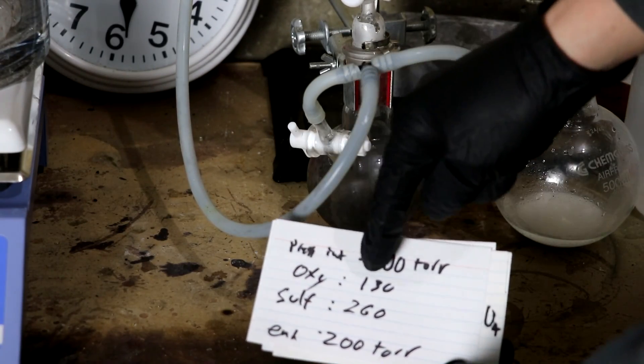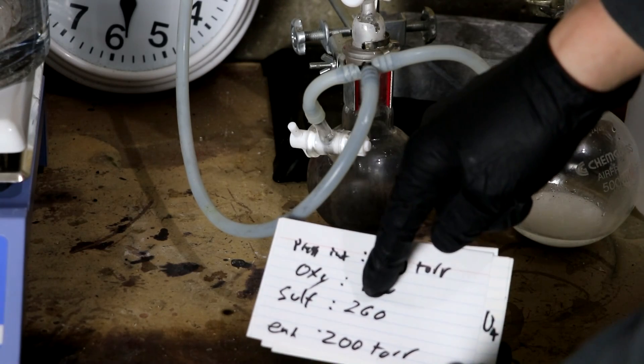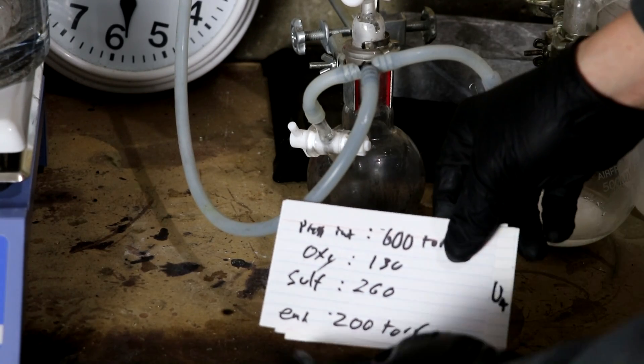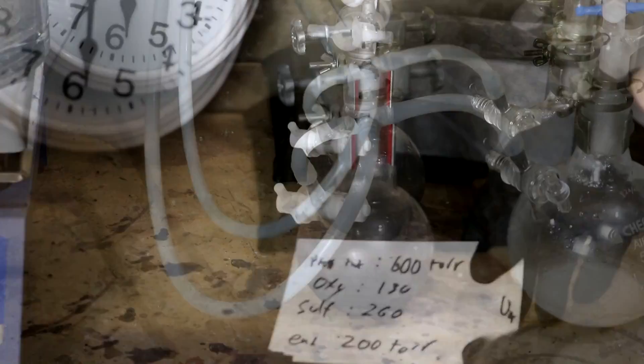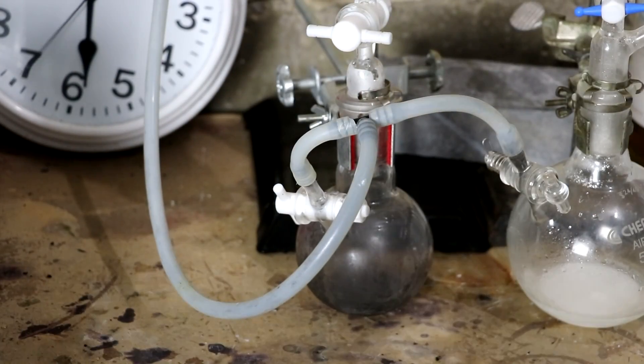So I'm going to take the pressure which is currently at negative 600 torr, 24 inches of mercury, to, I'm going to add 130 of oxygen and then about 260 of sulfur dioxide so I end up with a negative 200 torr. Alright, time to add in the gases.